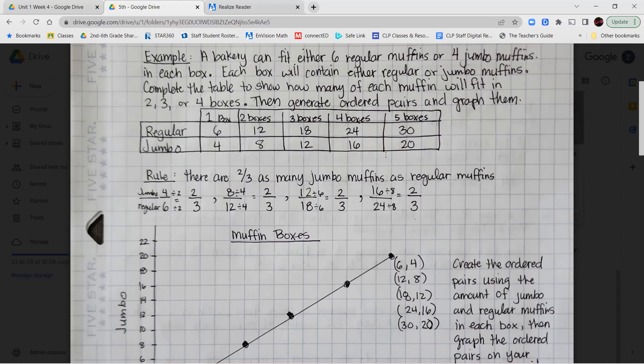In two boxes, it's going to be six plus six or six times two, which is 12 regular or four times three, which is 12 jumbo. And then for four boxes, 24 regular or 16 jumbo by following that same rule. And same with the five boxes.